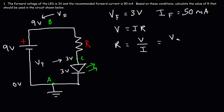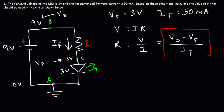The voltage across the resistor is going to be the difference between VS and VF. The current that flows through the resistor is the same current that flows through the LED, because they're in series, and that's going to be IF. So to calculate R, the formula we need is: the source voltage minus the forward voltage of the LED, divided by the forward current of the LED.